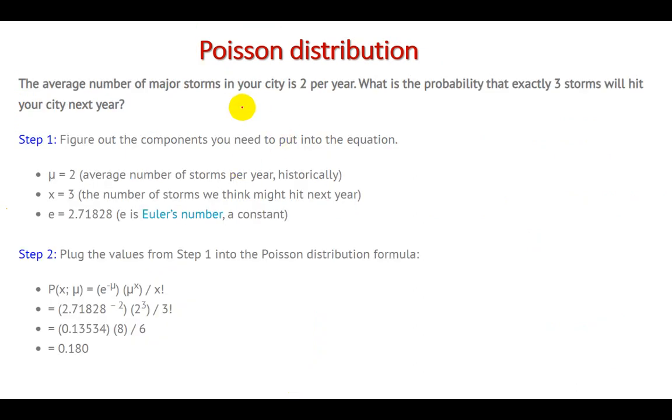The average number of the major storms in your city is 2 per year. What is the probability that exactly 3 storms will hit your city next year? 2 are in the first year. Majorly, we have seen average. What are the chances of the 3 storms coming in the next year? So the components will be first to figure out. Mu means lambda here. Here is lambda. Some formulas are written as mu. So understood, this is mu. Lambda also.